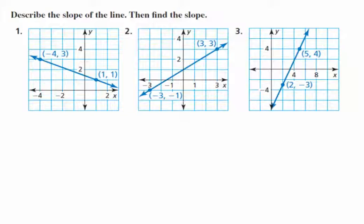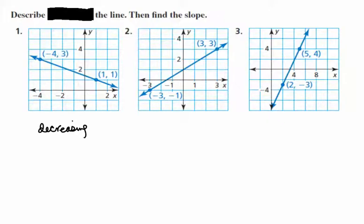In these examples, we're going to continue doing the same thing — describe the line. The reason I don't say 'describe the slope of the line' and call it increasing is that the slope is not increasing; the slope is constant throughout the line. But the line itself is increasing, decreasing, horizontal, or vertical. So for this first line, as we move from left to right it is decreasing, with slope down 2 over 5 — negative 2 fifths.